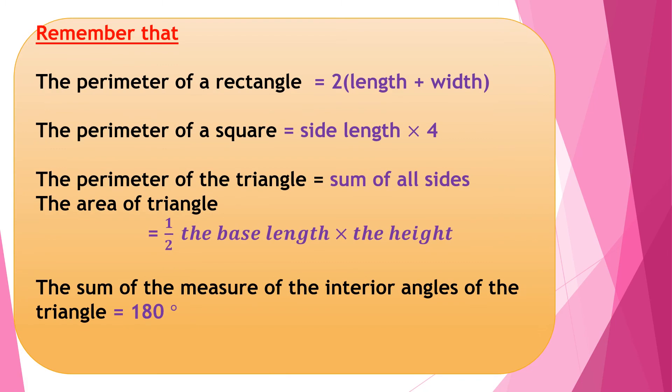Before the next example, we must remember: the perimeter of a rectangle is 2 times (length plus width); the perimeter of a square is side length times 4; the perimeter of a triangle is the sum of all its sides; the area of a triangle is half the base length times the height; and the sum of the interior angles of a triangle equals 180 degrees.